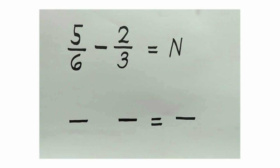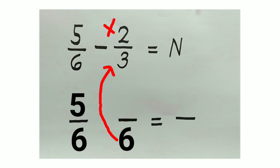The least common denominator of 6 and 3 is 6. 6 divided by 6 is 1, times 5 is 5. Then, 6 divided by 3 is 2, times 2 is 4.